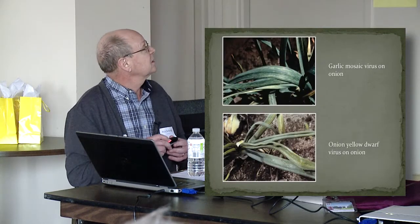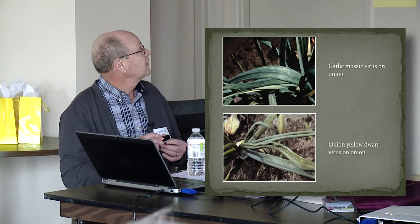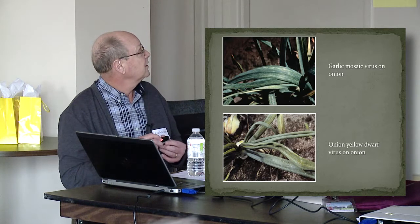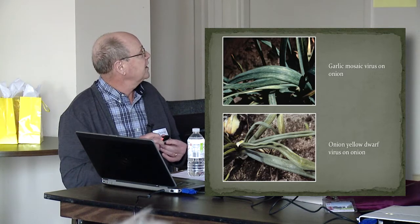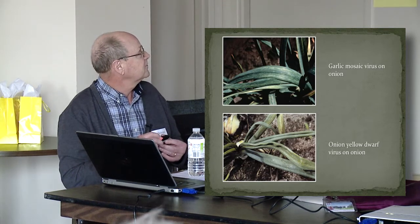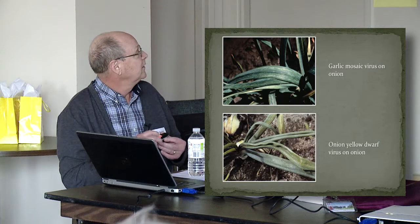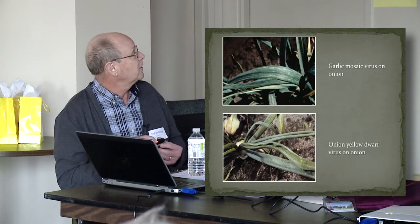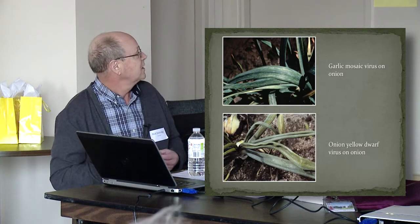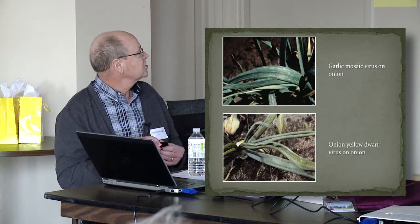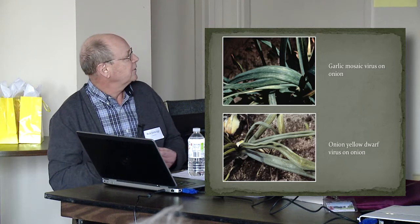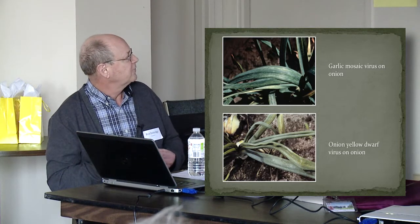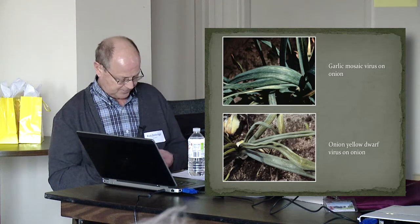This is on onion — the mosaic appearance and chlorosis with garlic mosaic virus, and the distortion of the foliage with onion yellow dwarf virus.